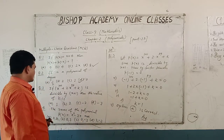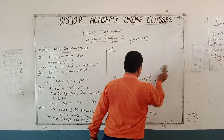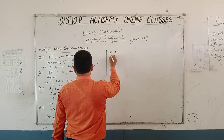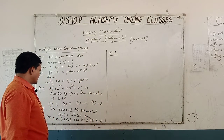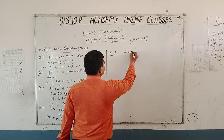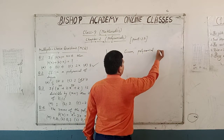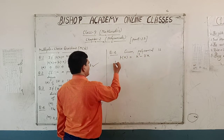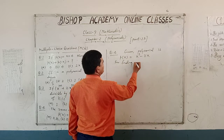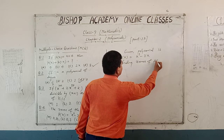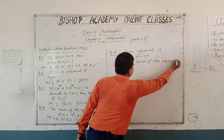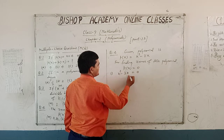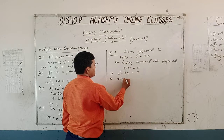Now students, we will solve question number 4. In this question we have to find out the zeros of the given polynomial. The given polynomial is P(x) is equal to x squared minus 3x. For finding zeros of this polynomial, we set P(x) equal to 0. This implies that x squared minus 3x is equal to 0.